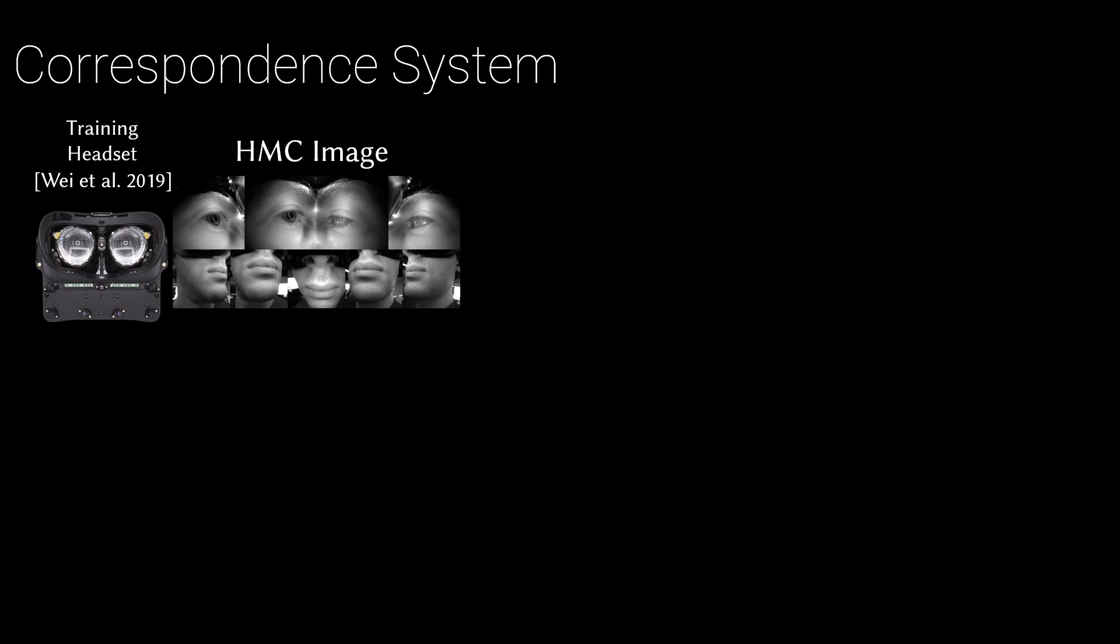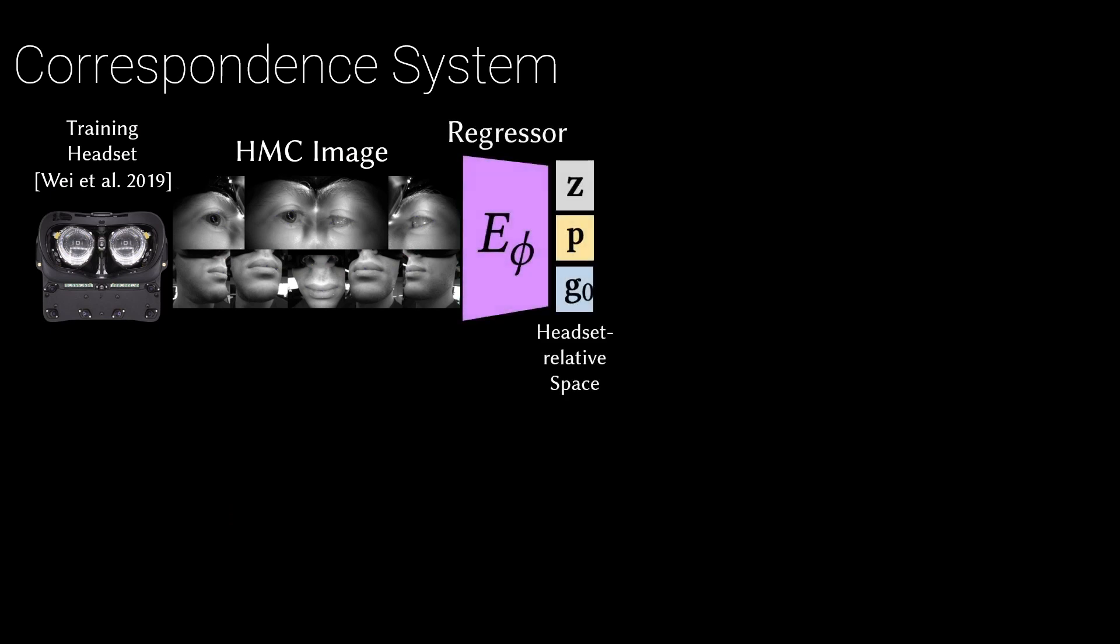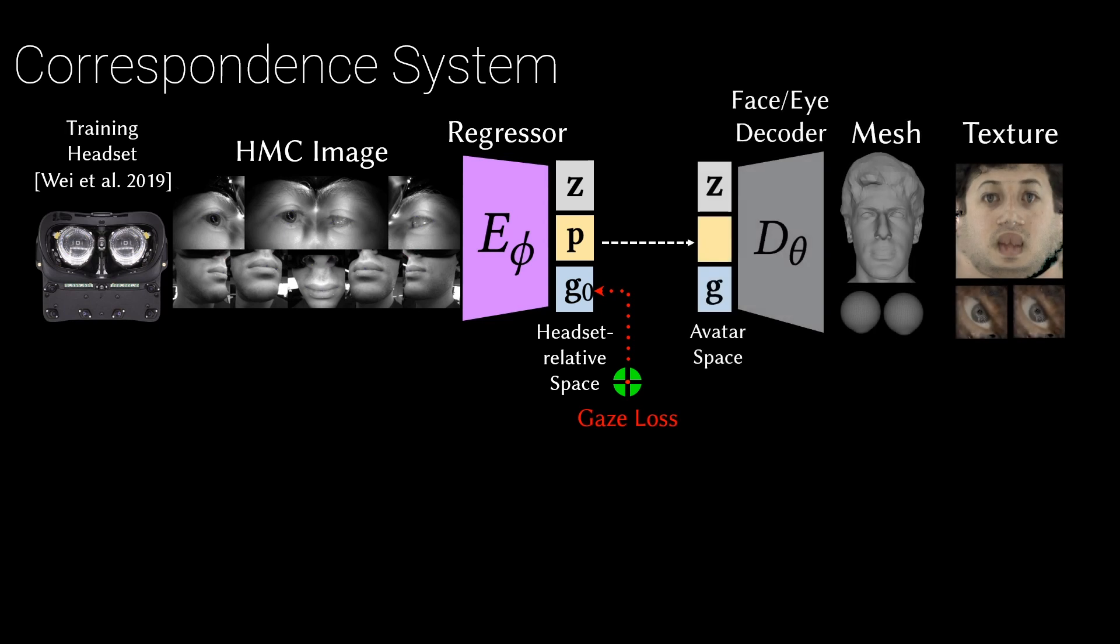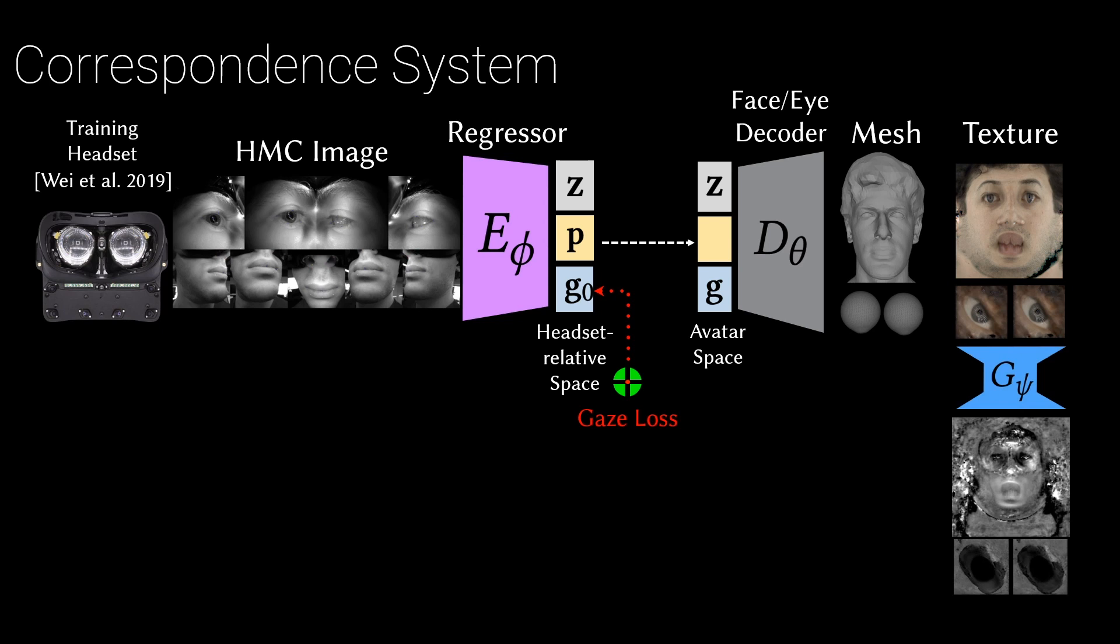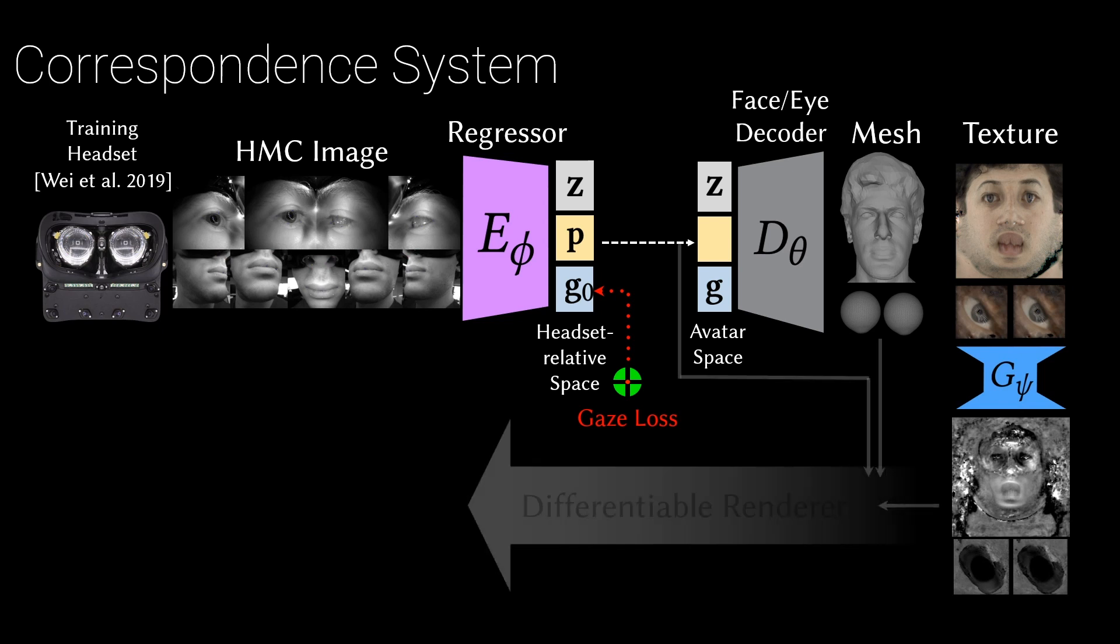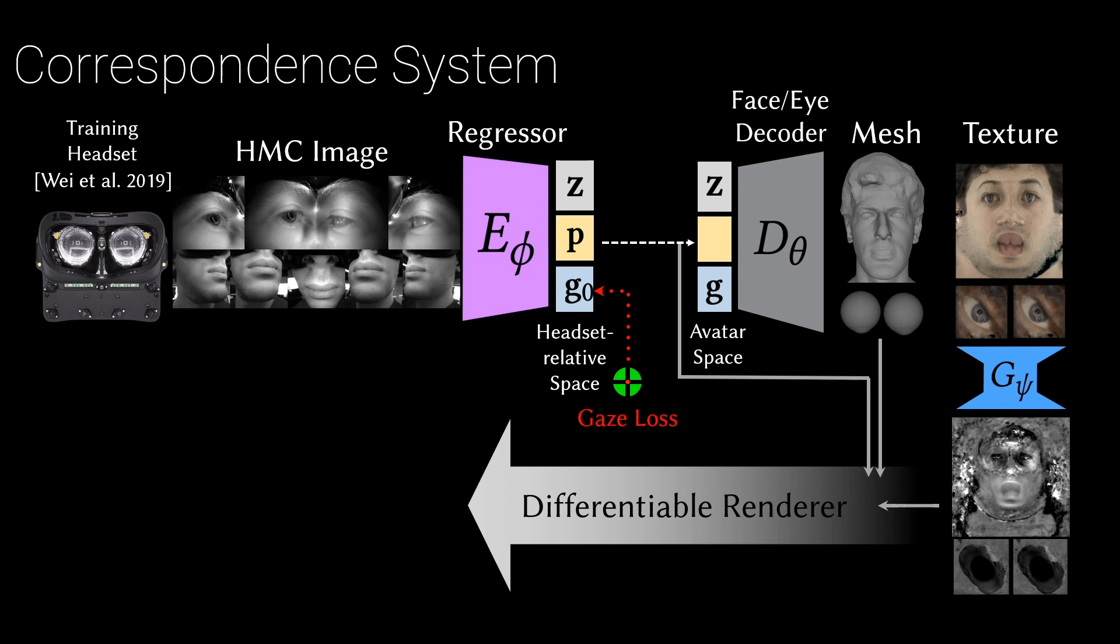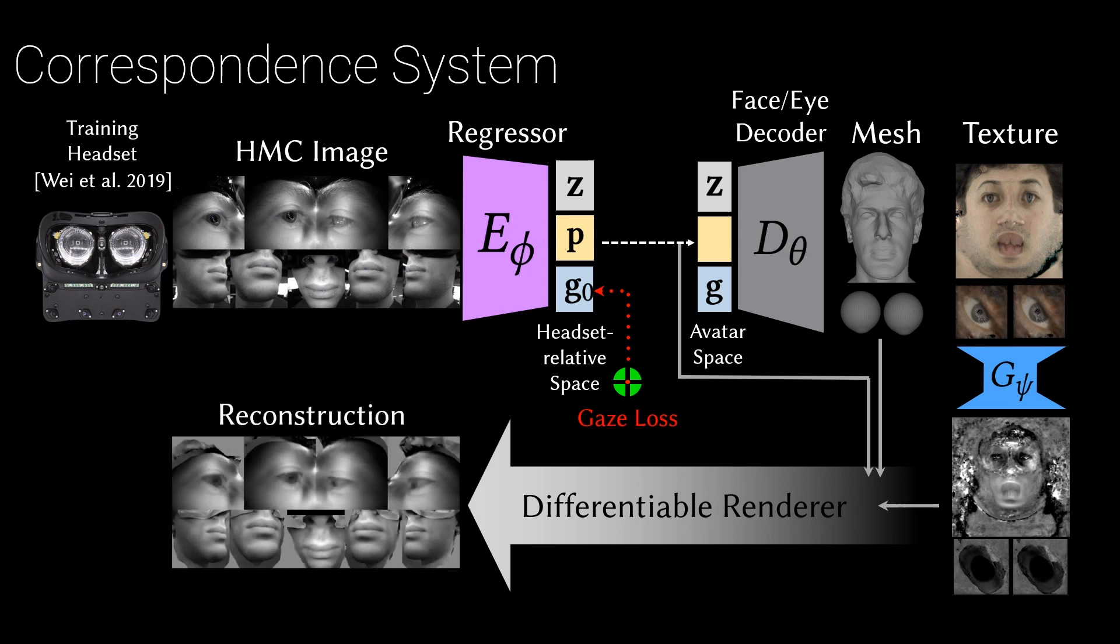Using a training headset with nine cameras to better capture the face, our correspondence model estimates expression, headset pose relative to the face, and additionally gaze direction from the headset images using a subset of frames with gaze labels. We then use these as inputs to decode the mesh and texture for each headset camera viewpoint. We jointly train a shallow network to convert avatar textures into the headset domain, render the avatar, and optimize the entire system end-to-end to match headset images using differentiable rendering.